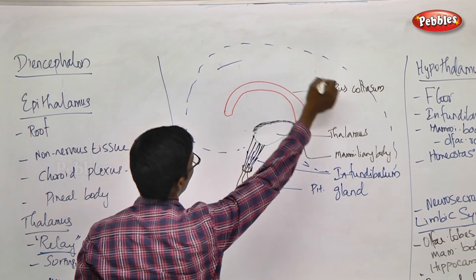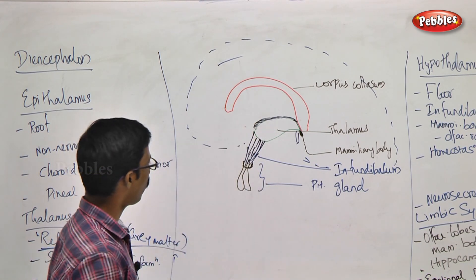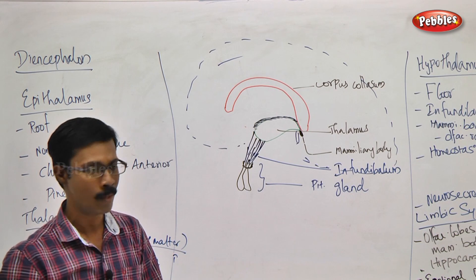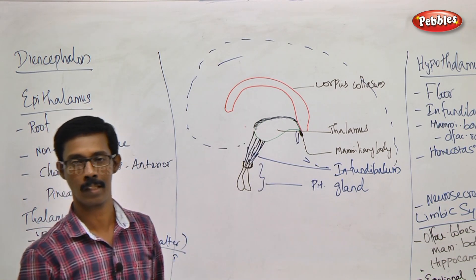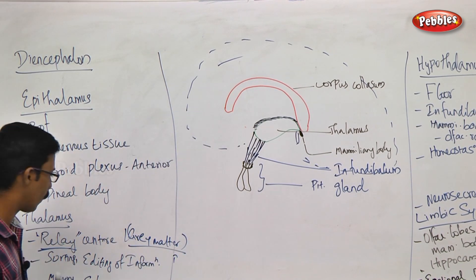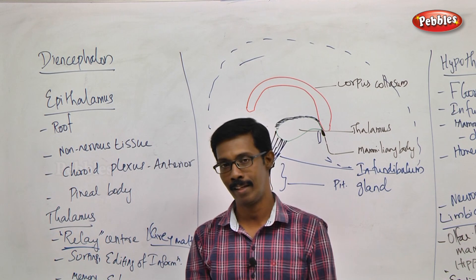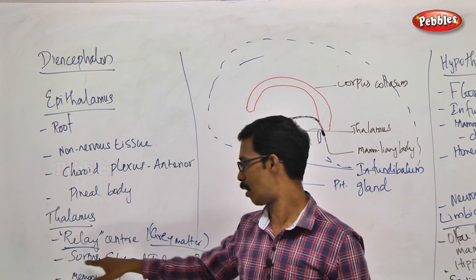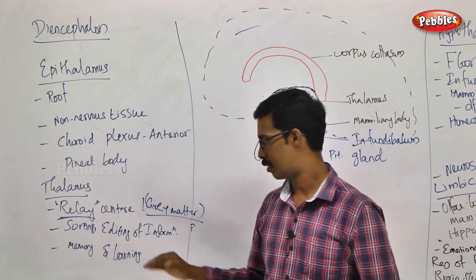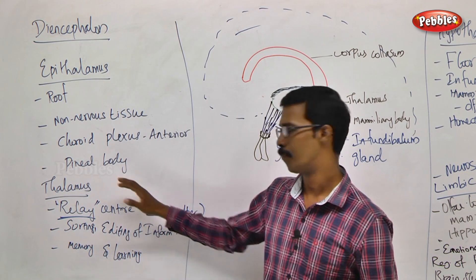In the cortex we have all the lobes — frontal lobes, parietal lobes, temporal lobes, and occipital lobes. The information from all these areas first reaches the thalamus. In the thalamus, the cortex region processes the information, and then the signal is passed on. This is what relay center means — that is the major function. The thalamus is also responsible for sorting and editing information. Memory and learning functions are also associated with the thalamus.